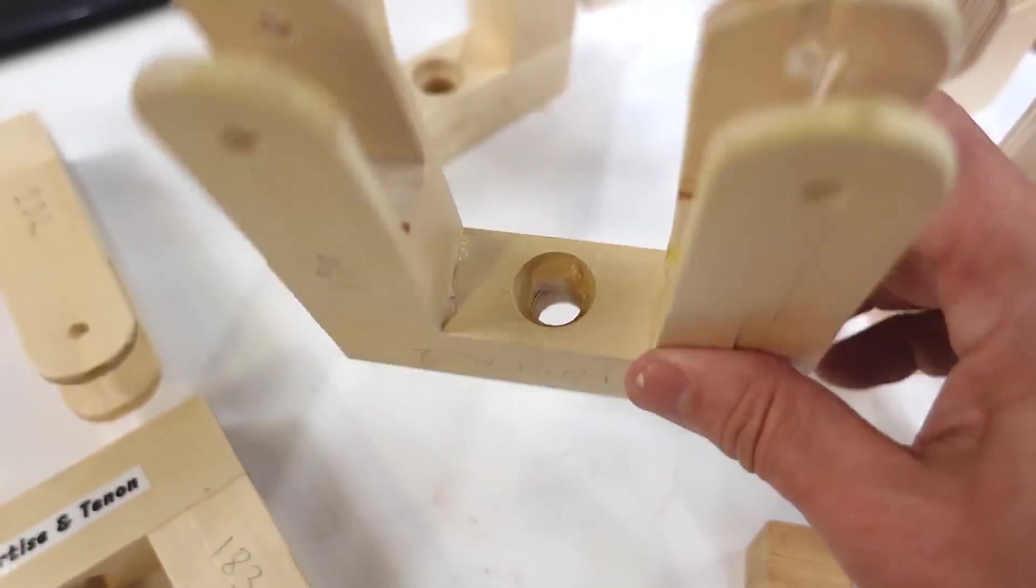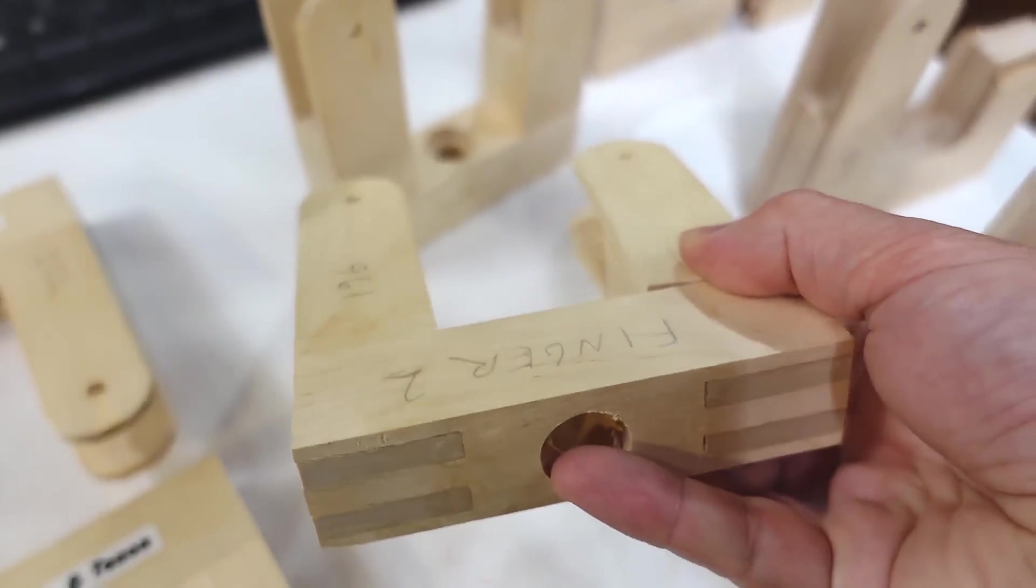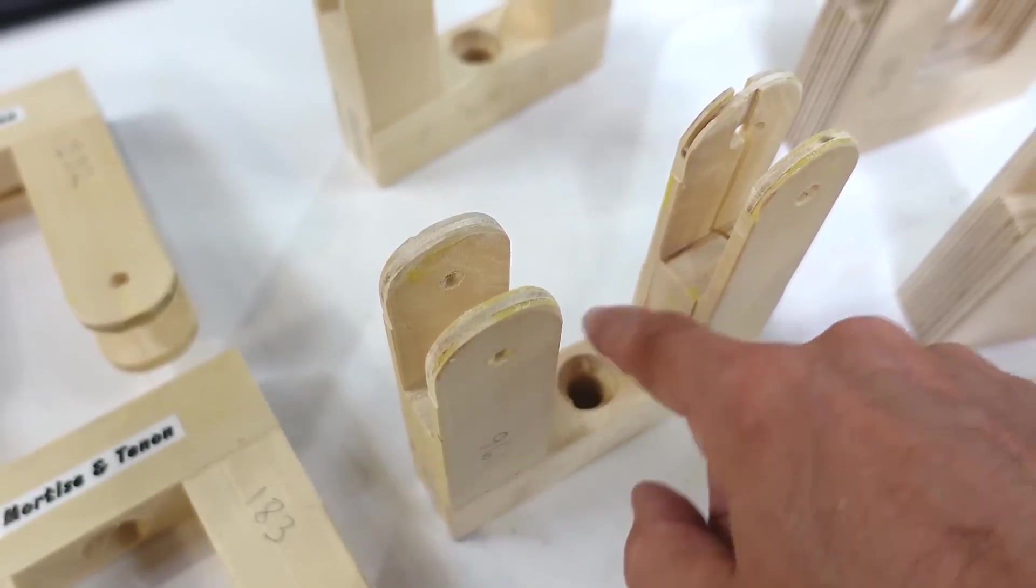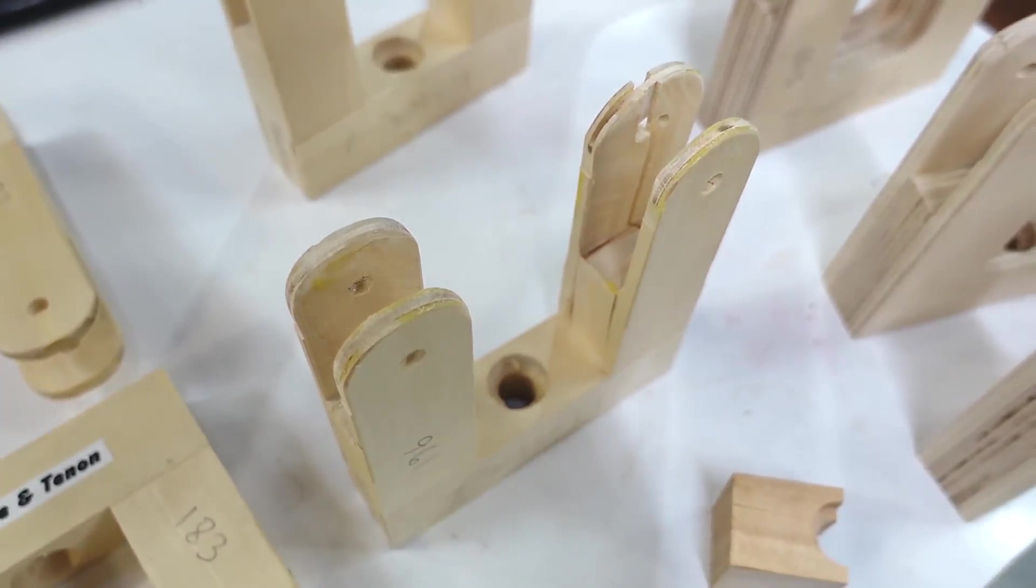And, why that big hole? Well, that's Marius' clamp design. So, there's a threaded rod that goes through here with a nut on either side so that the threaded rod has a metal thread to go on which will make it turn much more easily.